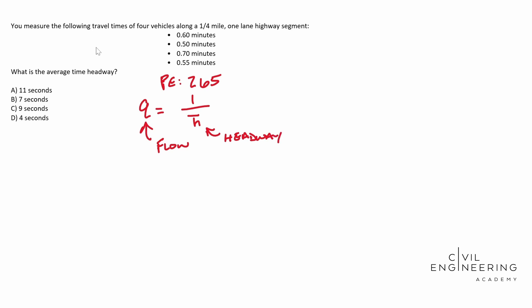So clearly what we need to find is our flow so that way we can solve for our headway. We're doing a little bit more digging. We're going to see that Q is equal to N over sigma from I equals one to N of H sub I.